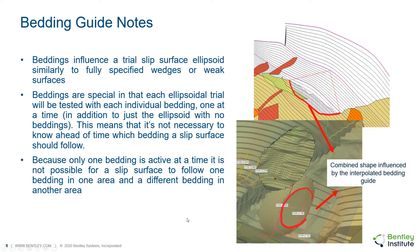The beddings influence a trial slip surface ellipsoid, similarly to the use of fully specified wedges or weak surfaces in Plexis 3D LE. The beddings are special in that each ellipsoid trial will be tested with each individual bedding one at a time. This means it is not necessary to know ahead of time which bedding a slip surface should follow, so the user has plenty of flexibility in adding reference beddings and increasing or decreasing the quantity of interpolated surfaces.